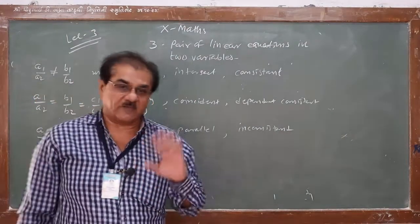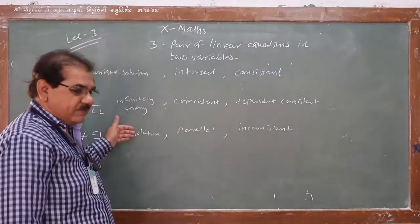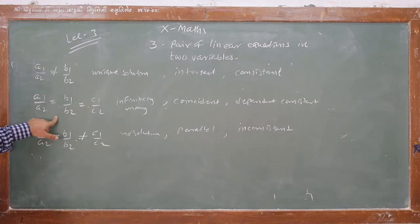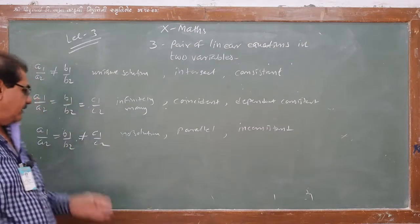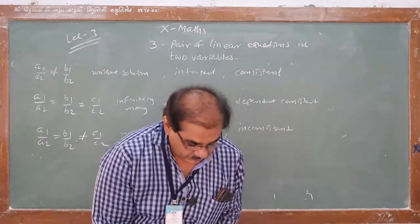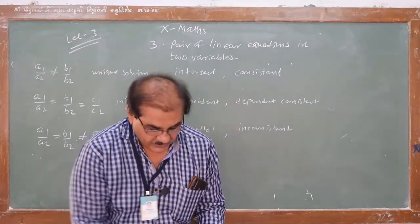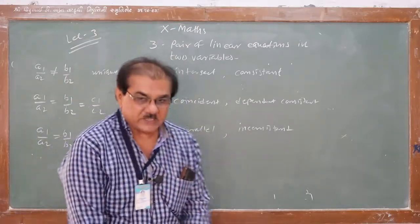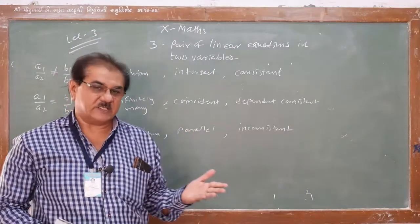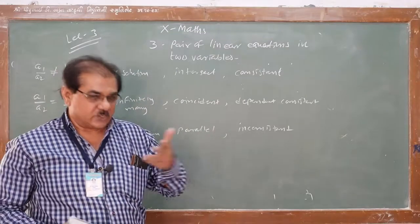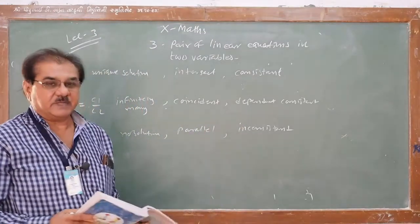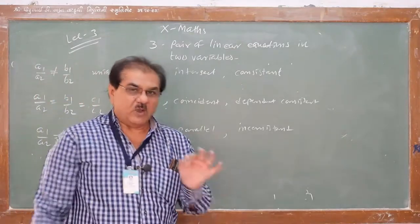Both lines are parallel and the pair of equations are inconsistent. These three cases we saw in the last lecture with three examples, drawing rough graphs. We proved that for the first case lines intersect at one point, for the second one line falls on the other, and for the third both lines are parallel. In standard 10 you are not asked to draw a graph, but you should know how to translate a given problem into pair of equations.